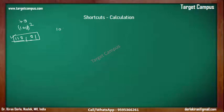One more: square of 108. This is plus 8 from 100. Our answer again gets divided into two parts. Plus 8 squared is 64. And 108 plus 8 is 116. So the answer is 11664.